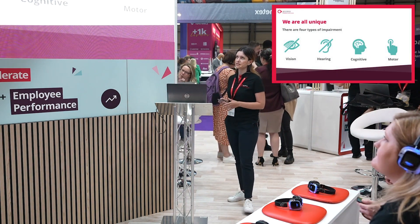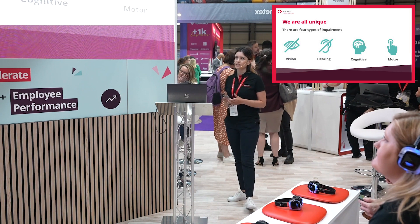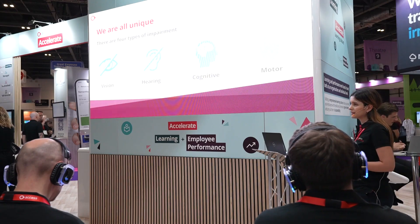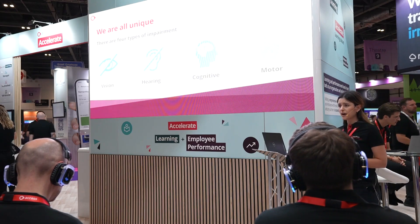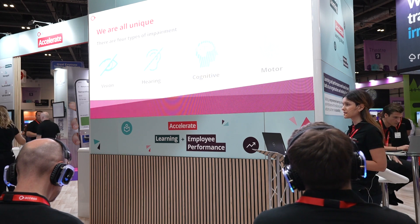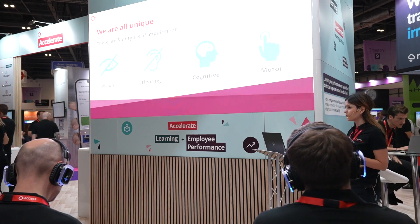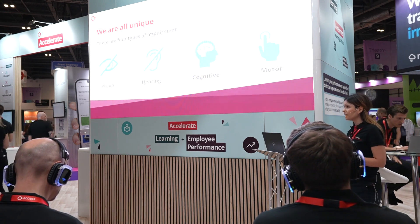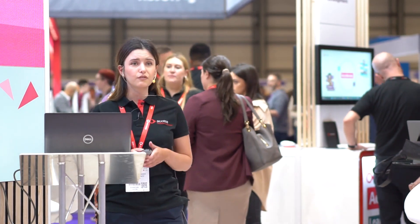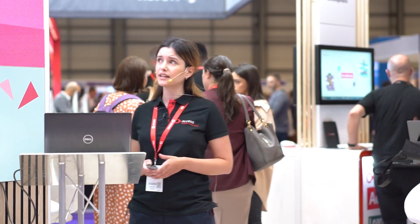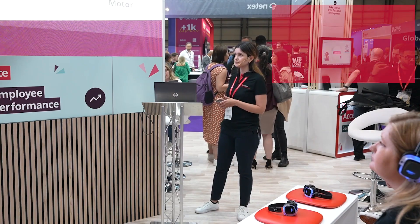First things first, what counts as a disability? Disability is any condition of the body or mind that affects the way the individual interacts with the world around them, including the way they perceive and process information. And there are four types of impairment: vision, hearing, cognitive, and motor.